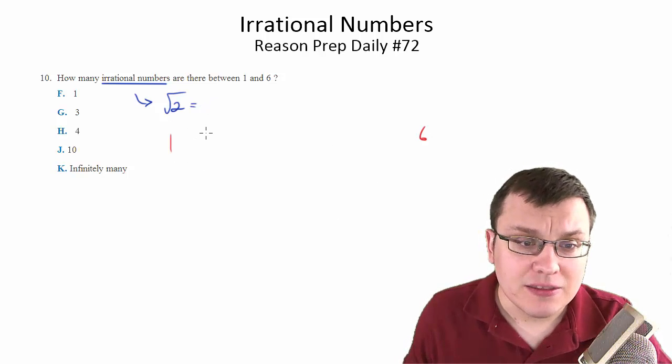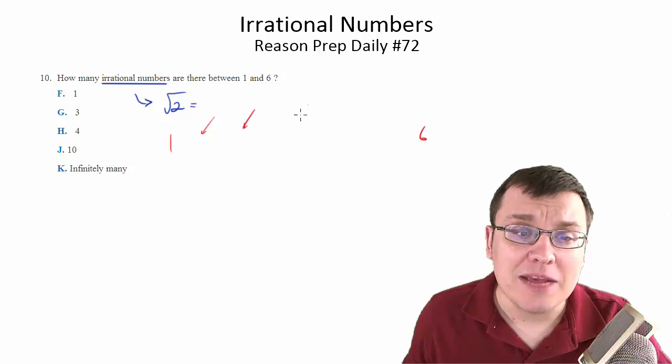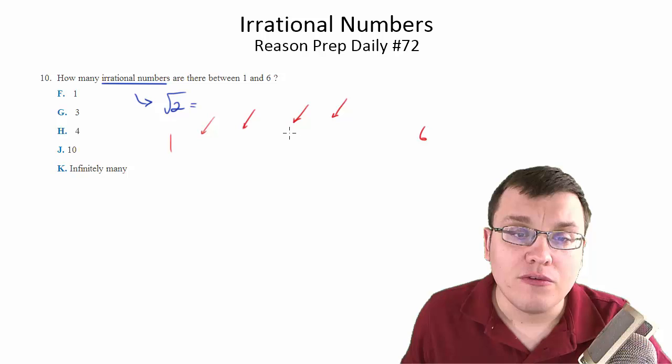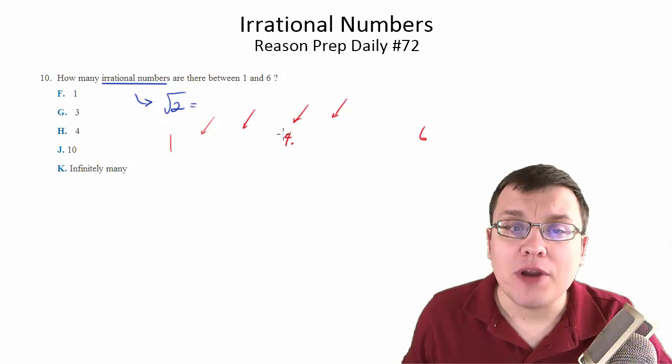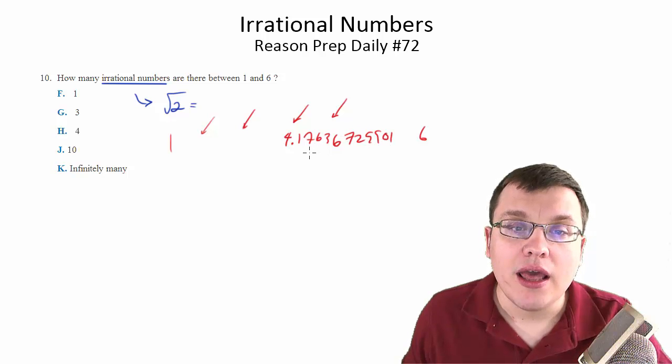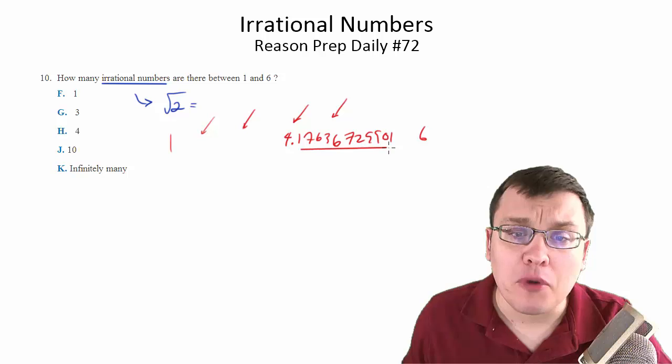I can just pick at any point an arbitrary position, let's say right here at 4. I can just make up a number, 4.17636729901. And I can imagine that this number could go on forever, right?